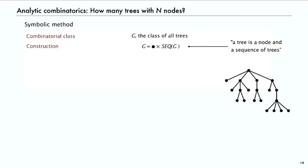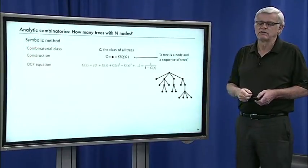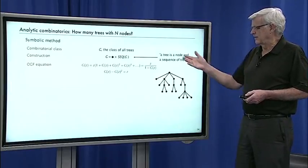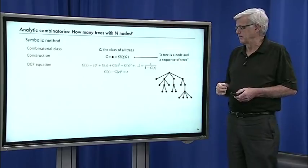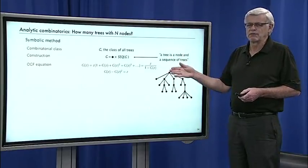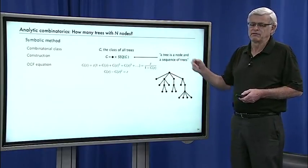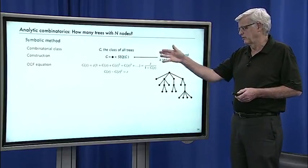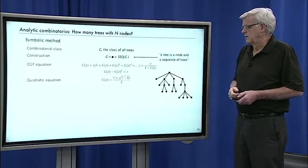And just using the transfer theorem from the construction to the generating function that we just described, that immediately says that the generating function has to satisfy the equation z for the node over 1 minus g of z for the sequence of trees. G of z equals z over 1 minus g of z. In solving that, g of z minus g of z squared equals z. So that's an equation that the generating function must satisfy that we get immediately from the combinatorial construction, direct transfer.